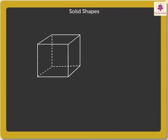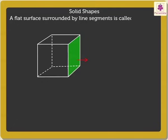Look at this solid shape. A flat surface surrounded by line segments is called a face of the solid figure.